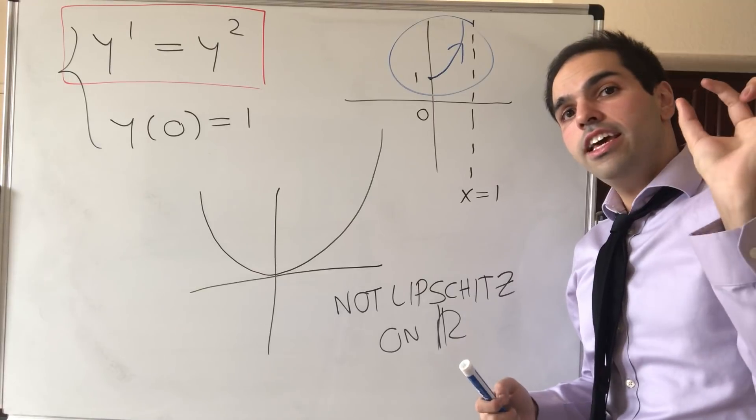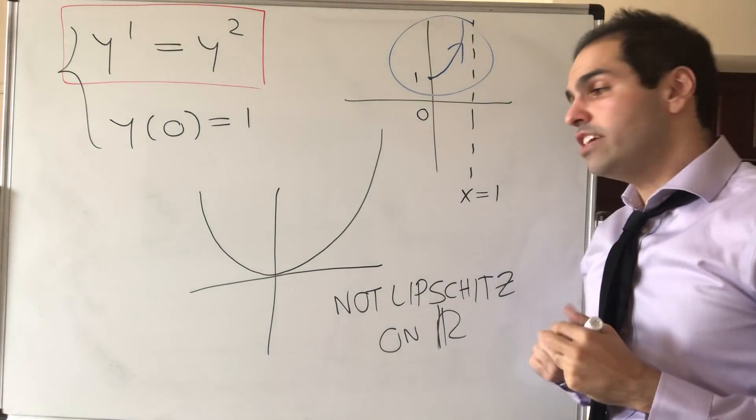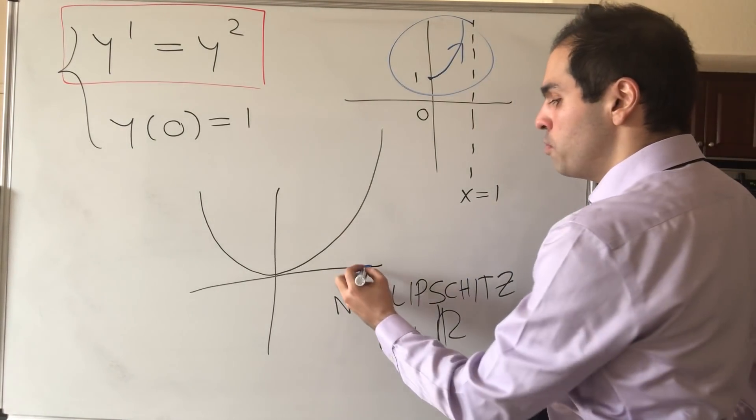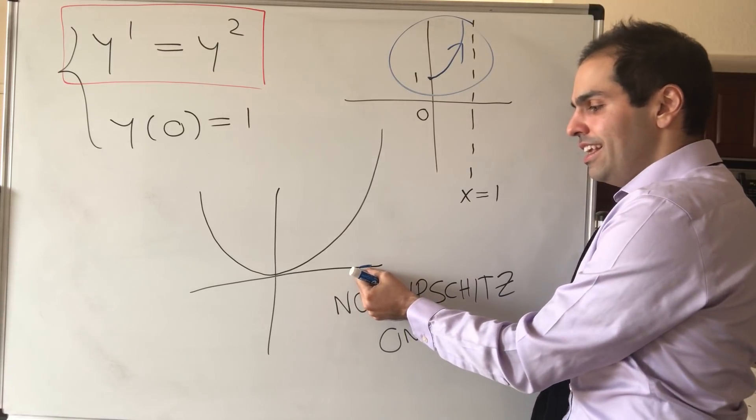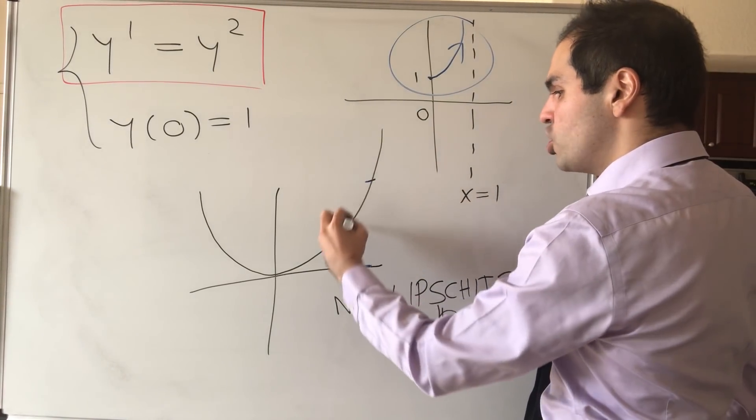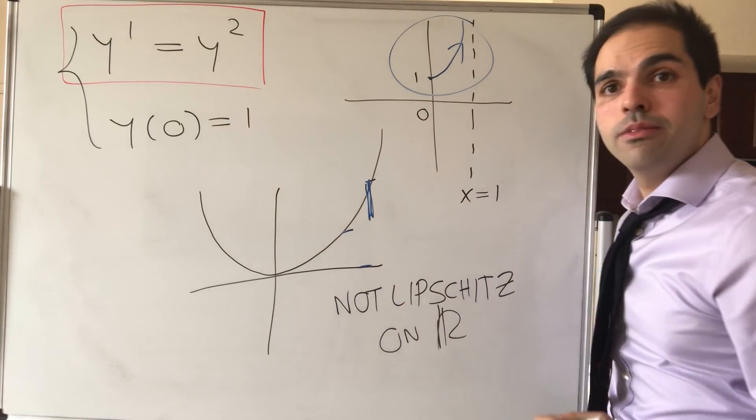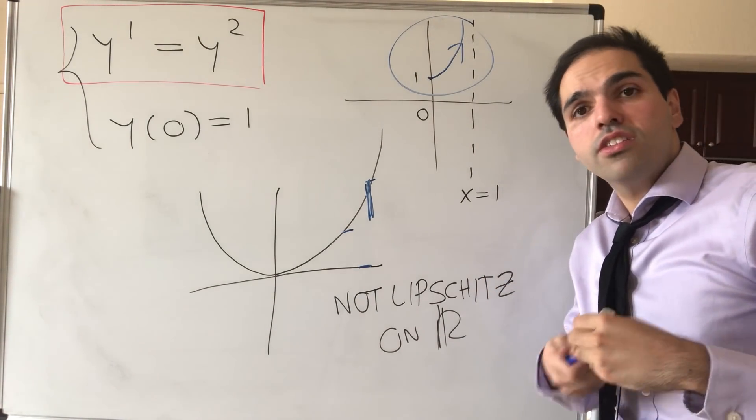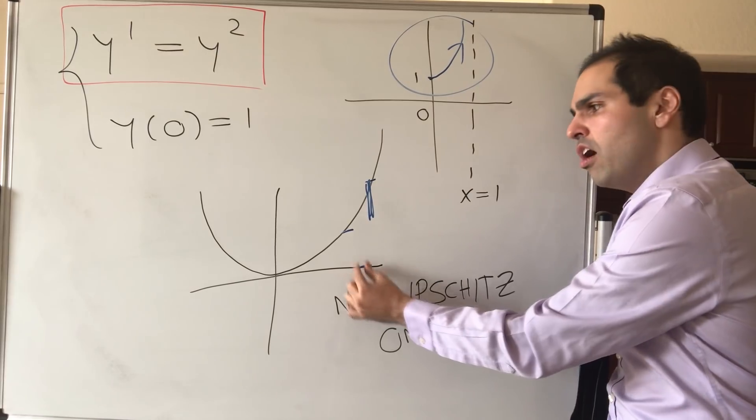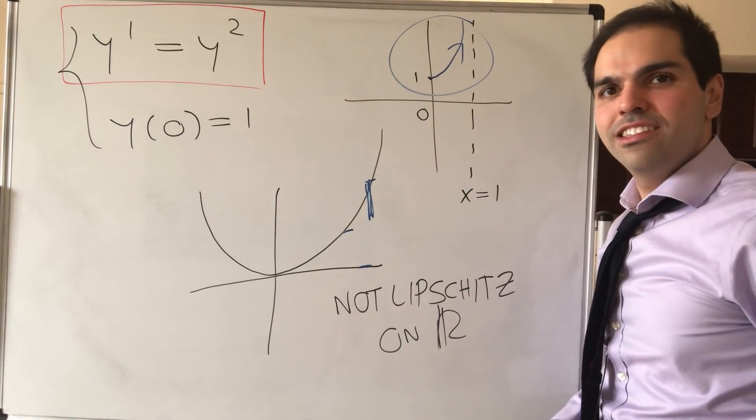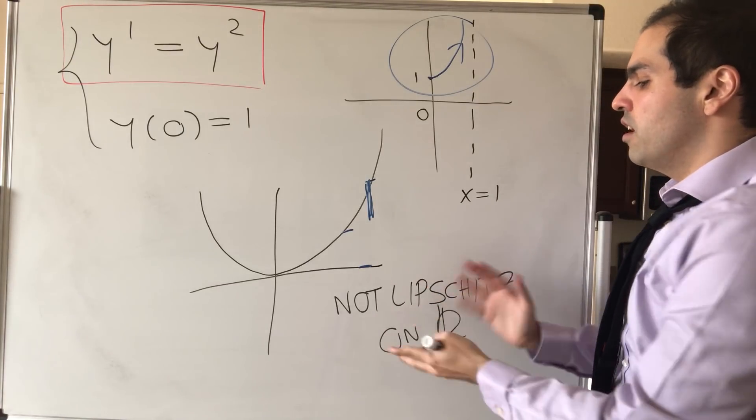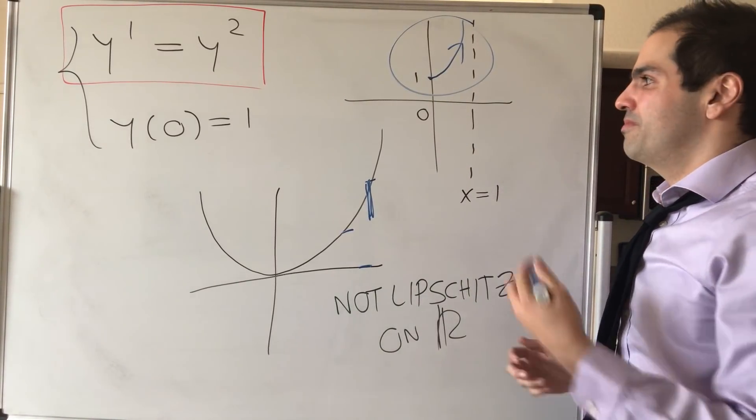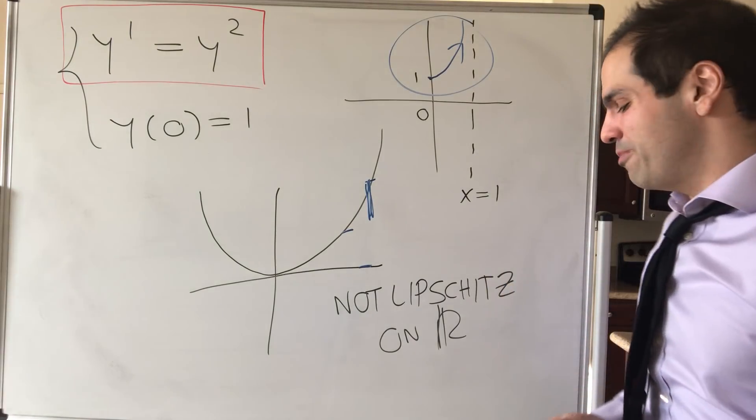So remember what continuity is. It means small inputs give you small outputs, and it's still true here. Like small inputs should give you small outputs. But relatively speaking, even though this is really small, this change is still really big. So even though it's continuous, it's not Lipschitz continuous. Lipschitz continuous means if this is very small, the output should also be relatively small. But this is not what's happening. And because of this not Lipschitz condition, we do have that this equation blows up. So the point is your assumptions are very important.